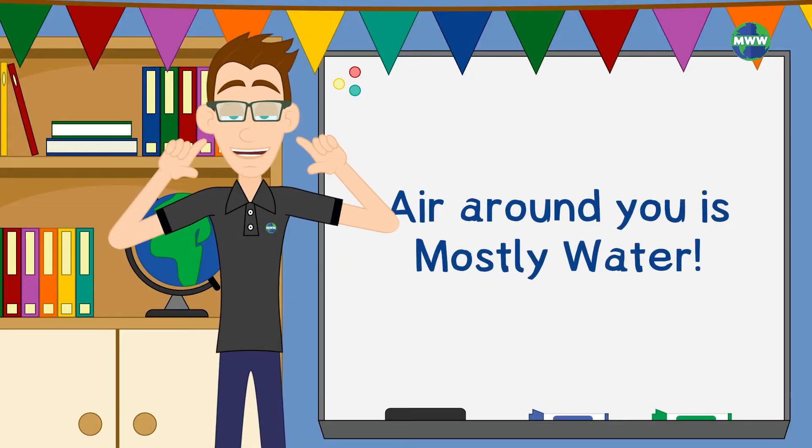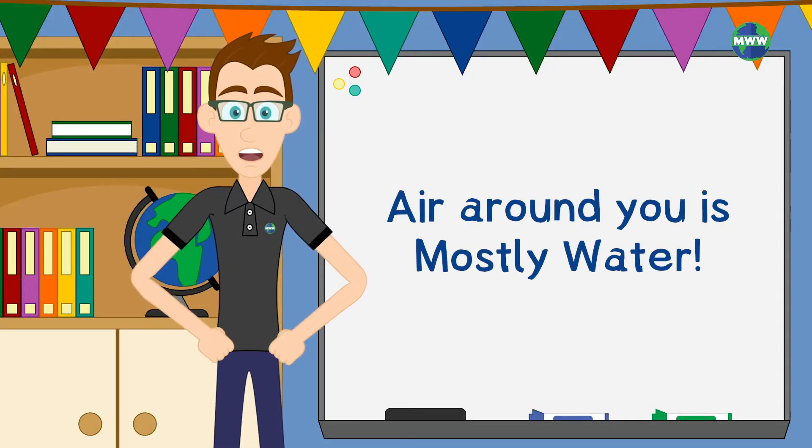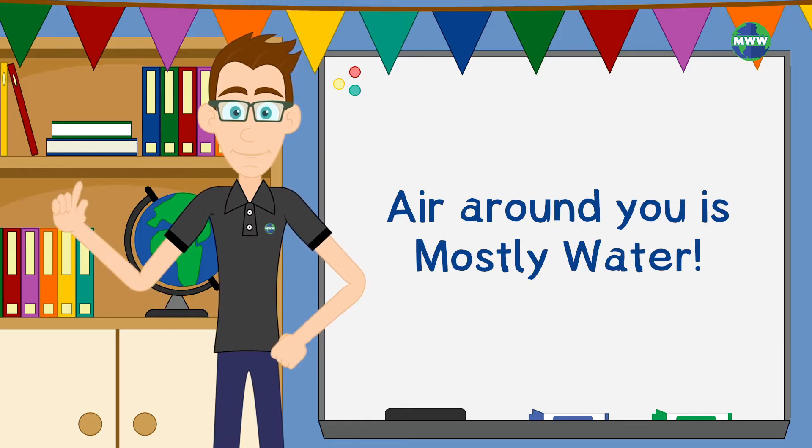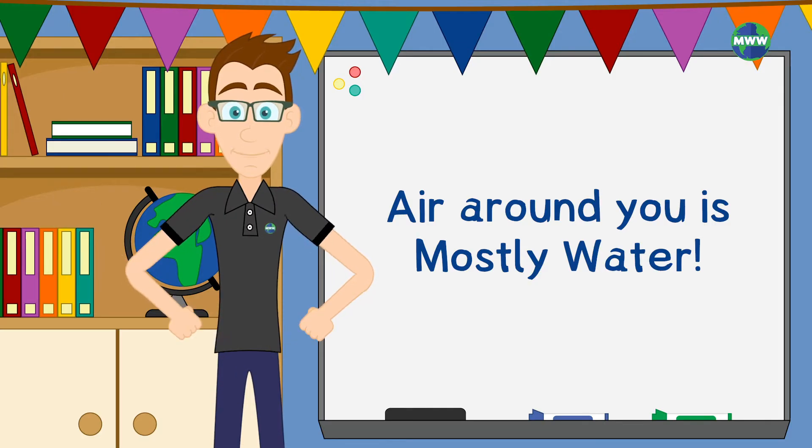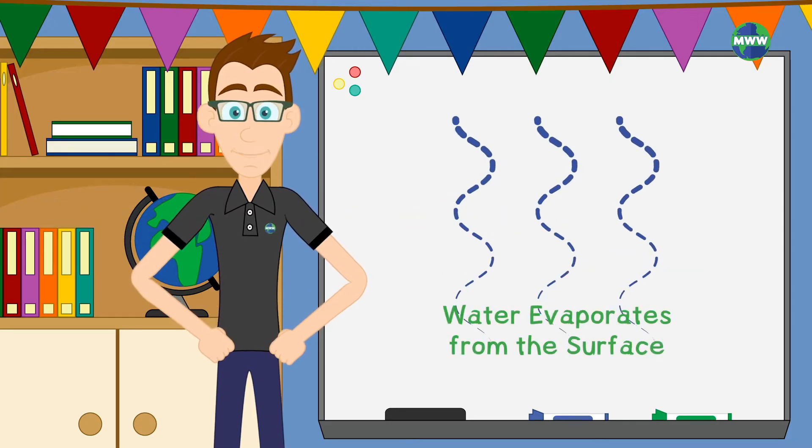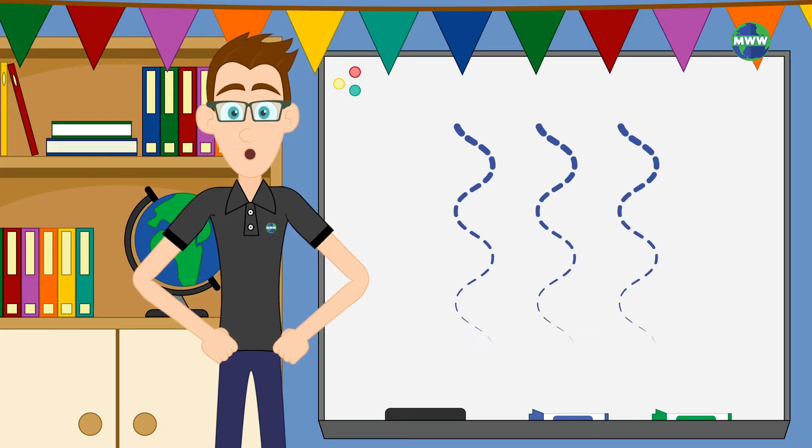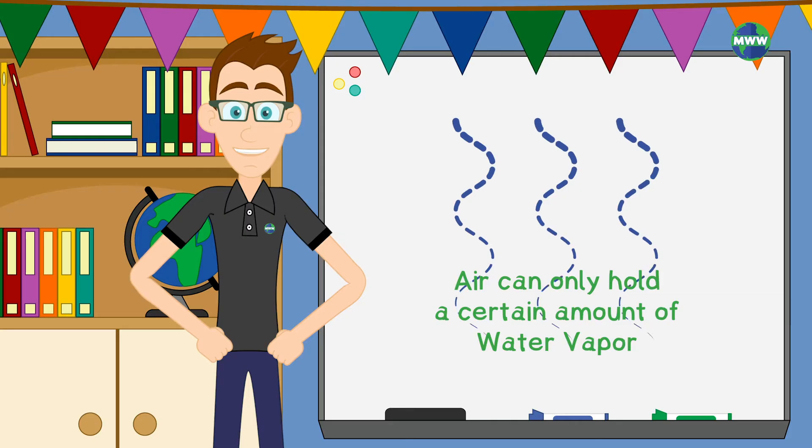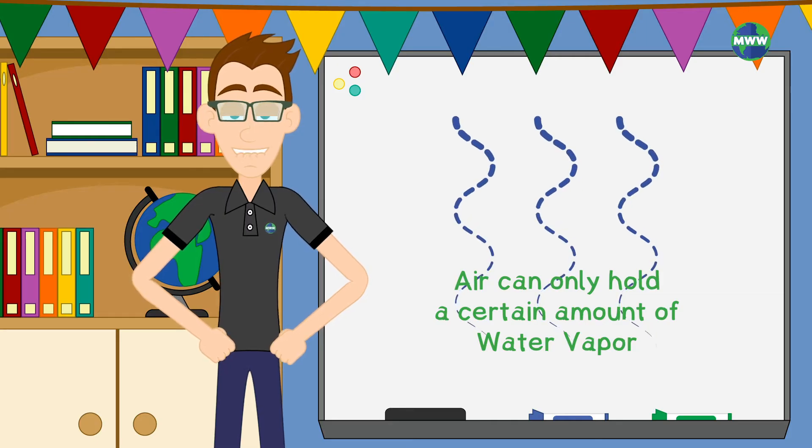Even if you can't see or feel it, the air around you is mostly water. More specifically, water vapor. Water vapor is everywhere because water from Earth's surfaces evaporates into the air. The air can only hold a certain amount of water vapor depending on the temperature and atmospheric pressure in a given area.